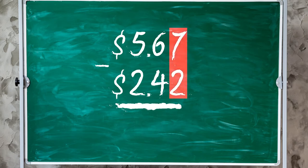Remember to start with the column on the right side of the decimal point. What is 7 minus 2? You're right! Write the 5 underneath the line.